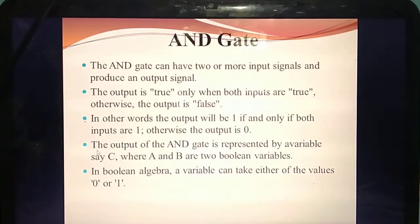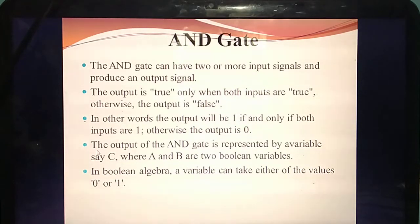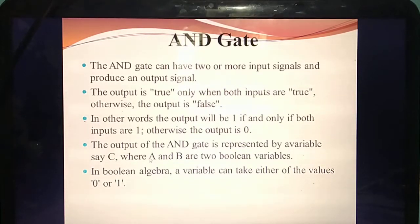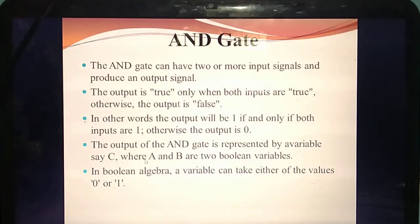Here the output is represented by variable C. Input variables are A and B. So C equal to A dot B. These two input variables each take either 0 or 1: 0 into 0, 0 into 1, 1 into 0, 1 into 1. How many input signals? Two. How many output signals? Only one. When can we say the output is true? Only if both inputs are 1, the output is also 1. Otherwise 0.